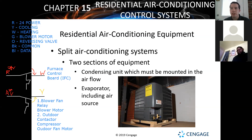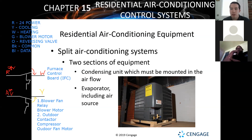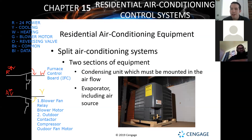Split units are used pretty much everywhere residentially. Places they won't be used are typically condos and apartment complexes, which might have package units, through-the-wall units, or other configurations. It just depends on the space, cost, and maintenance. What's cheap energy-wise when the building is being built matters — if natural gas is really cheap one year and you install a boiler system, then ten years later natural gas costs way more, that becomes a problem.